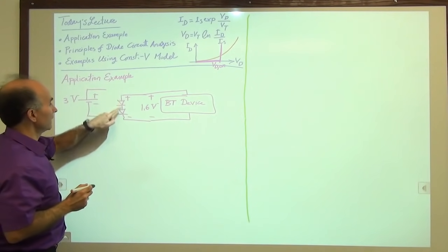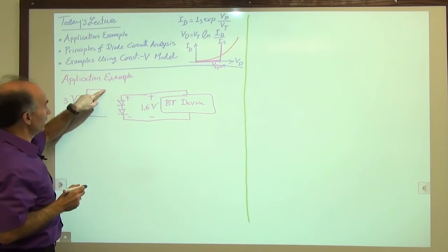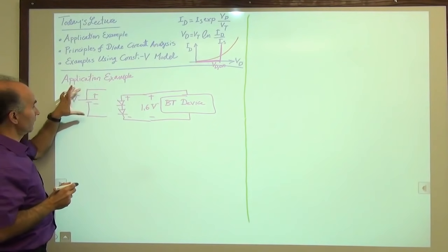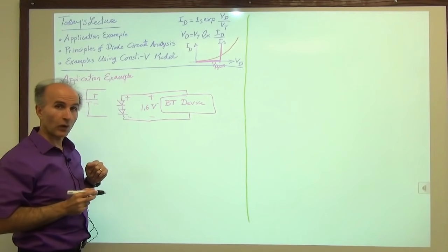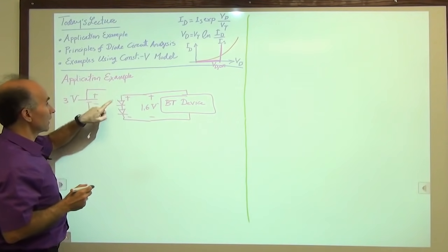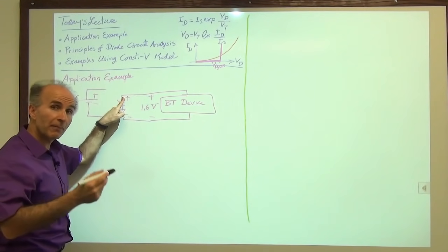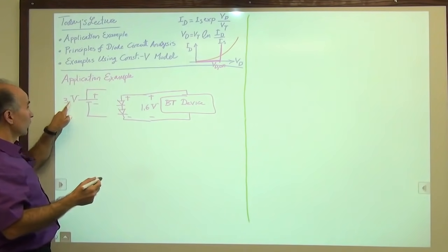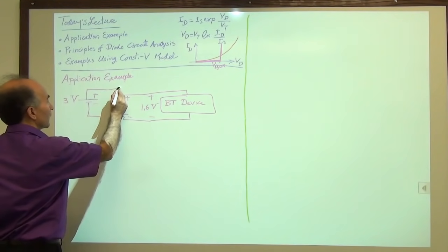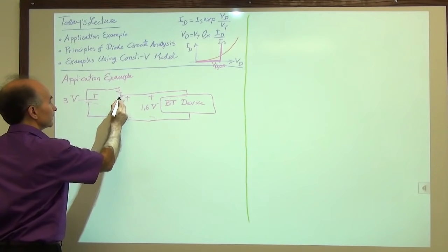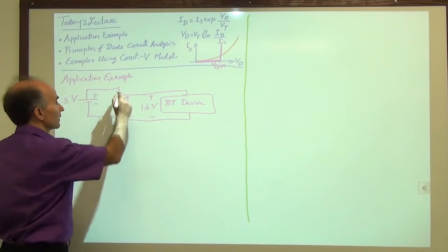We cannot connect the diodes directly to the battery with just wires, because then the full 3 volts would appear across the Bluetooth device and damage it. We need some component to sustain the remaining 3 minus 1.6 equals 1.4 volts. For that, we add a resistor R1 in the circuit.